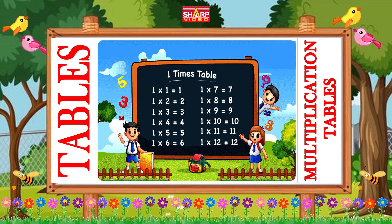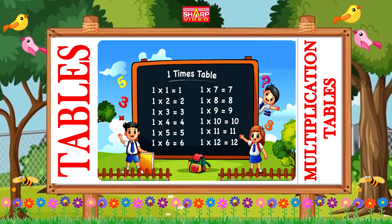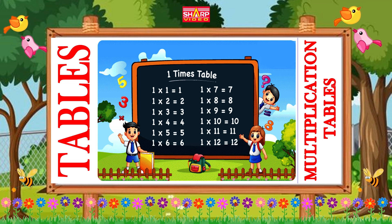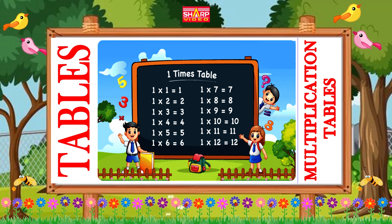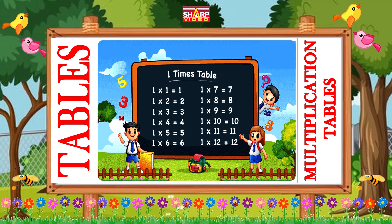One fours are four, one fives are five, one sixes are six, one sevens are seven.